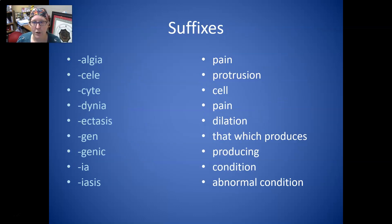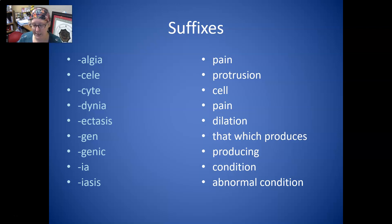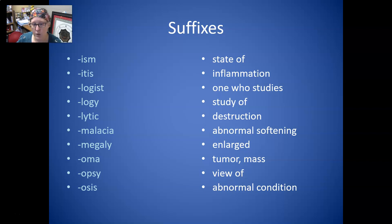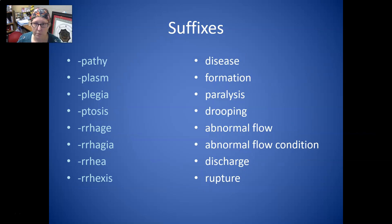Looking at suffixes: Algia is pain. And cele is protrusion. Cyte is cell. And dynia is also pain, just like algia. Ectasis means dilation. And gen means that which produces. Genic means producing. Ia is condition. And iasis is an abnormal condition. Ism is the state of. Itis is inflammation. Logist is one who studies. And logy is the study of. Lytic is destruction. Malacia is abnormal softening. Megaly is enlarged. And oma is a tumor or a mass. Opsis is view of. And osis is abnormal condition.